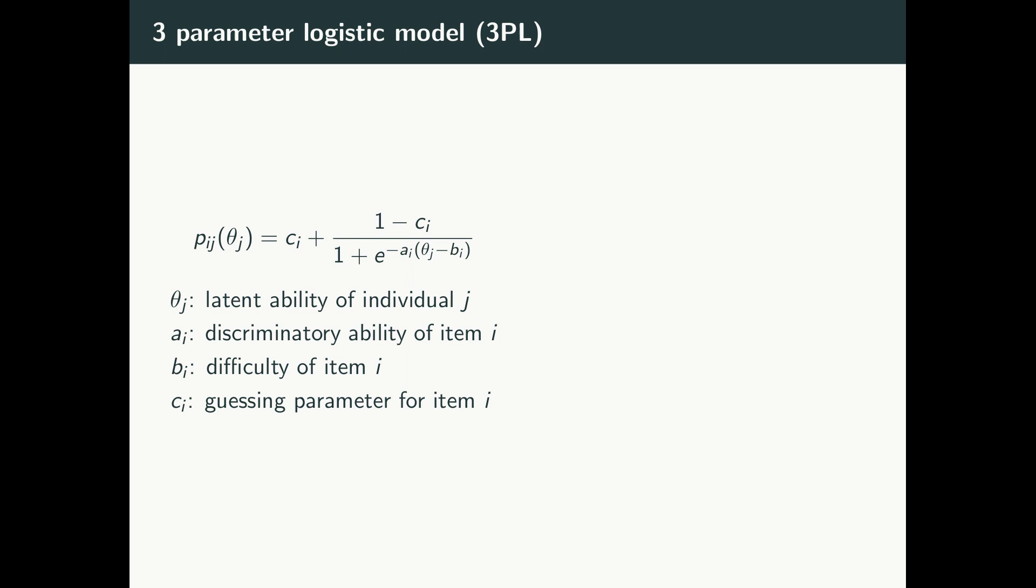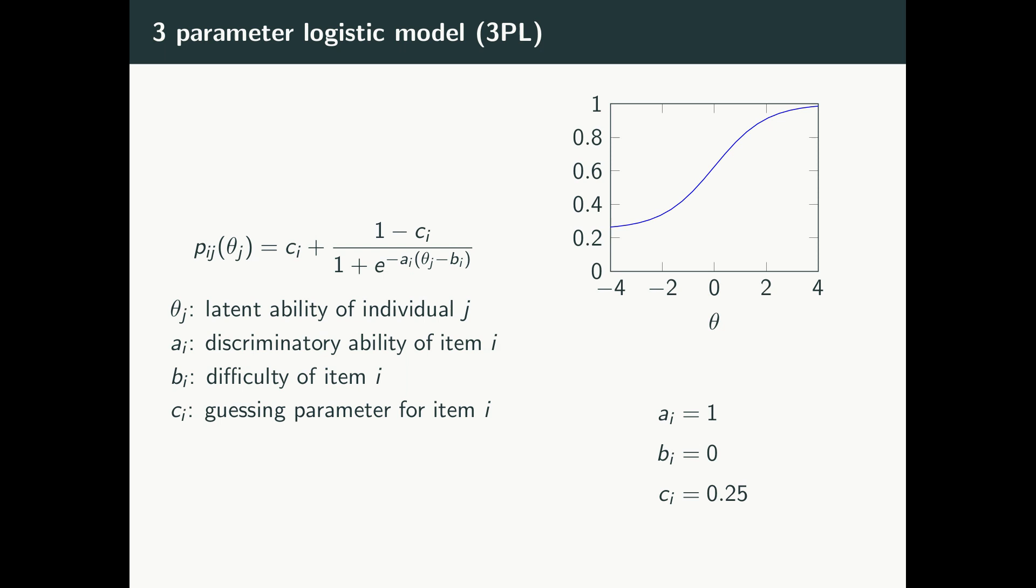A common IRT model and the model we consider in this work is the three parameter logistic model. For a given individual J and a given item I, the probability that individual J will answer item I correctly is a function of individual J's latent ability theta and item I's latent discriminatory, difficulty, and guessing parameters.